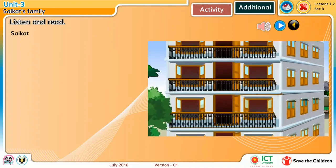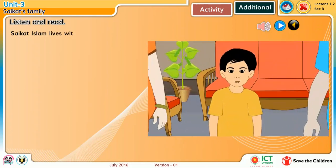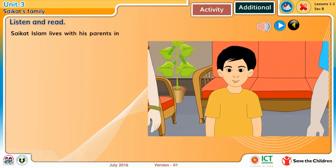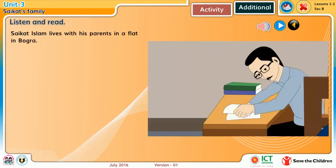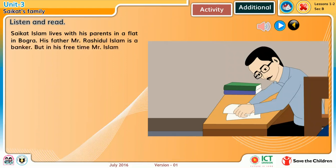Shoikot Islam lives with his parents in a flat in Bogura. His father, Mr. Rashidul Islam, is a banker. But in his free time, Mr. Islam writes stories and listens to music.